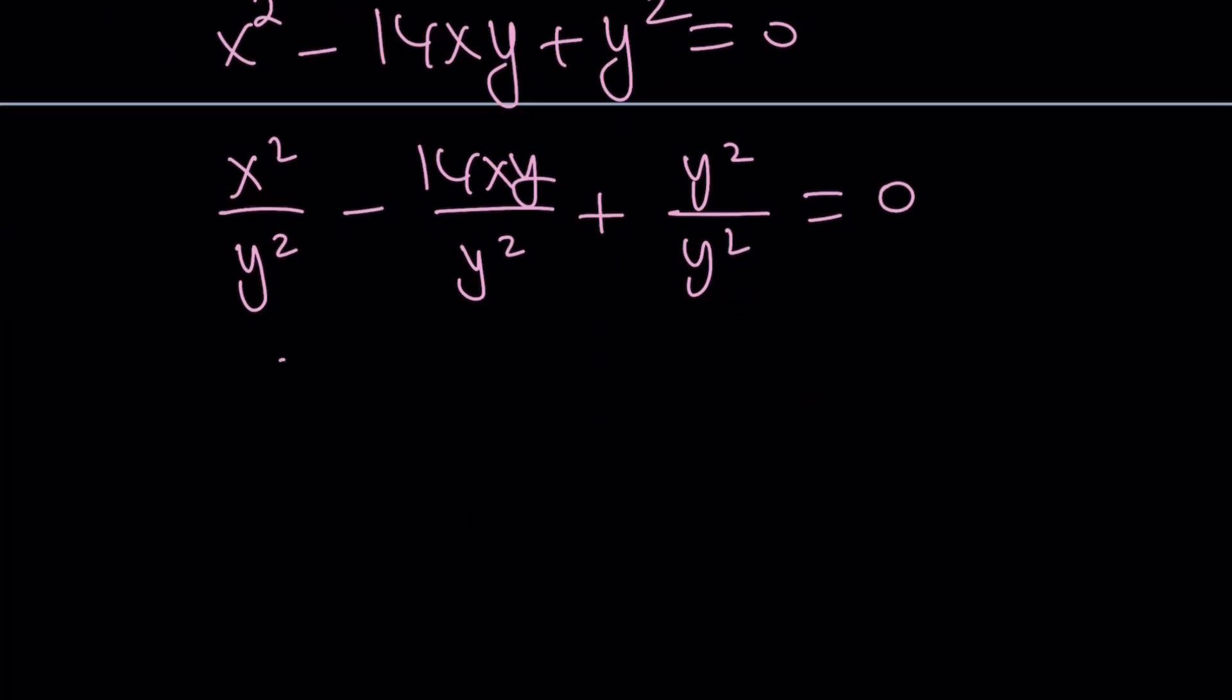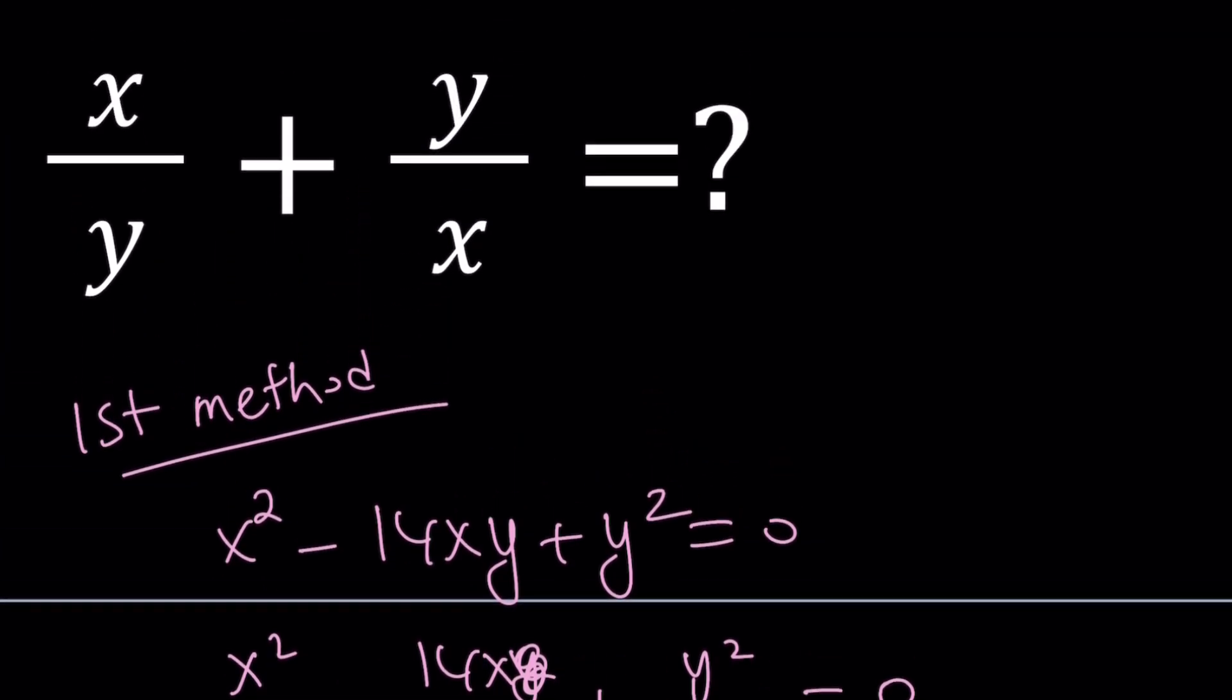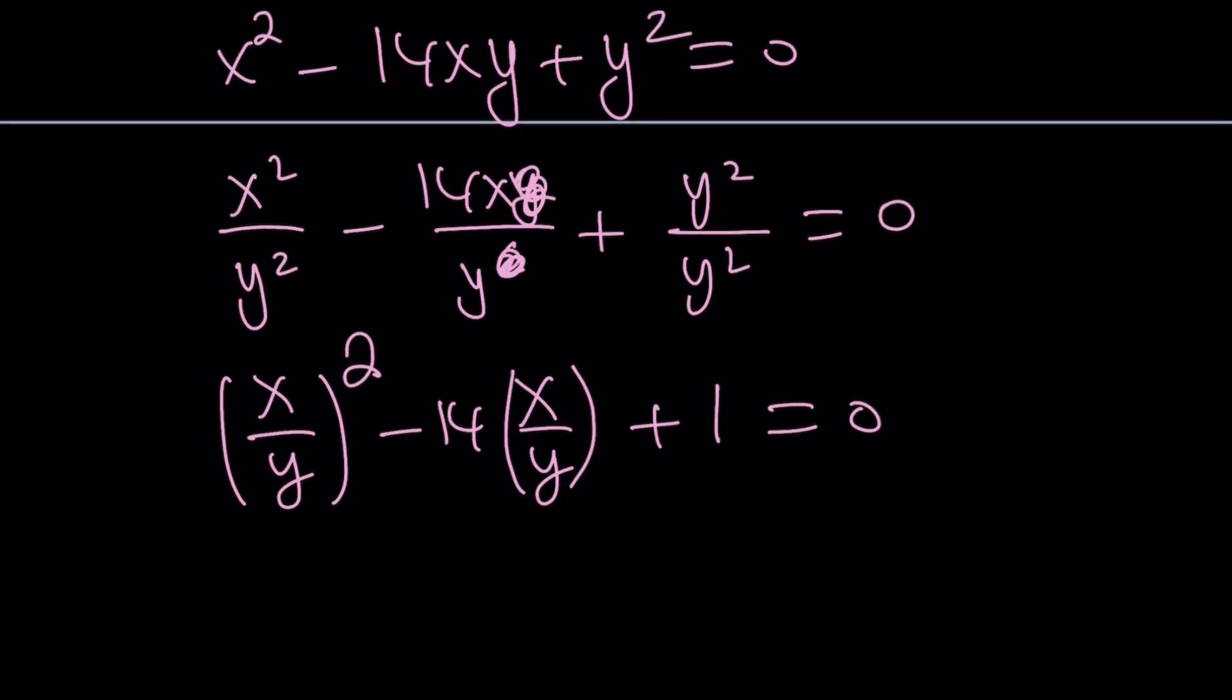Now here we get x squared over y squared, which can be written as x over y squared. Here y squared cancels out with y. So I can write this as 14 times x over y. And then this is plus 1. Obviously, x and y both have to be different from 0. Otherwise, I can't evaluate this expression. So now, this becomes a quadratic equation in x over y.